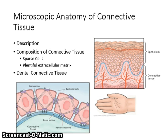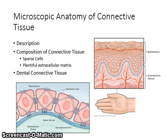The epithelium does not have its own blood supply and receives nourishment from blood vessels in the connective tissue. The epithelium–connective tissue interface is the boundary between these two tissues. It is composed of epithelial ridges — deep extensions of the epithelium — and connective tissue papillae, which extend upward into the epithelium. This functions to enhance adhesion and increase the area for nutrient delivery.